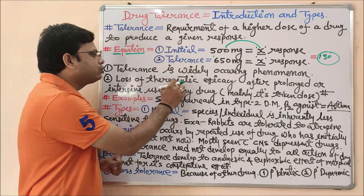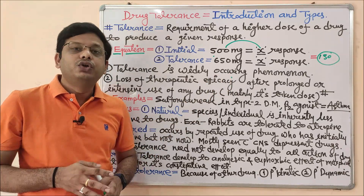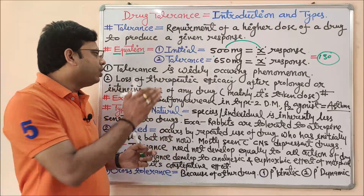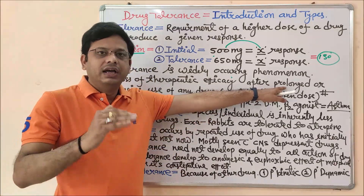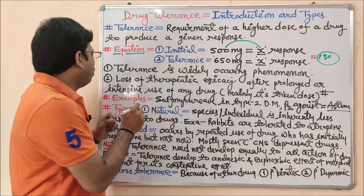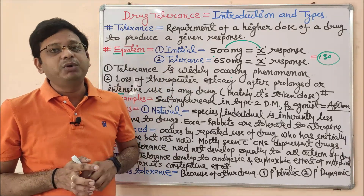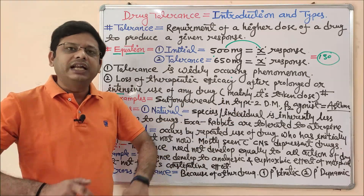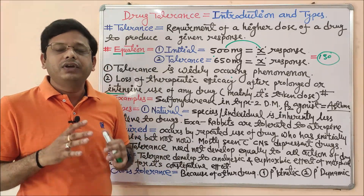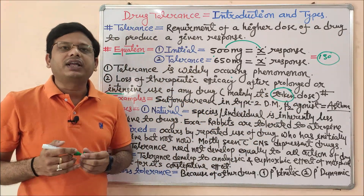Another key point: loss of therapeutic efficacy after prolonged or intensive use of a drug is a reason for drug tolerance. For example, an antibiotic producing good bacteriostatic or bactericidal activity — after prolonged or frequent use, that antibiotic will not be able to produce the same effect as it used to produce initially. That is why there are now many drugs which are tolerated or resistant in our body.